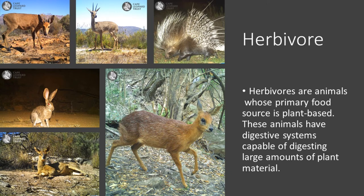Let's start with herbivores. Herbivores are animals whose primary food source is plant-based. These animals have digestive systems capable of digesting large amounts of plant material.